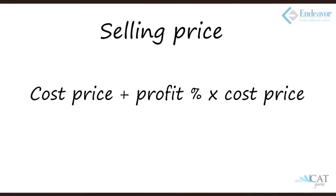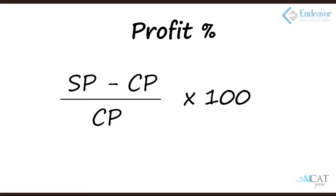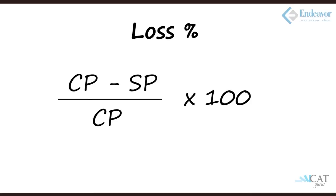Selling price equals cost price plus profit percentage multiplied by cost price. The profit percentage is: (selling price minus cost price) divided by cost price — cost price is the base. Similarly for a loss: cost price minus selling price, divided by cost price. This is how profit percentage and loss percentage are calculated.